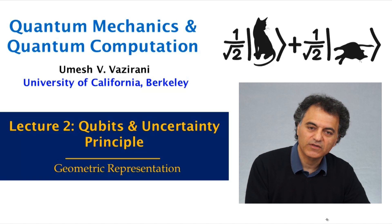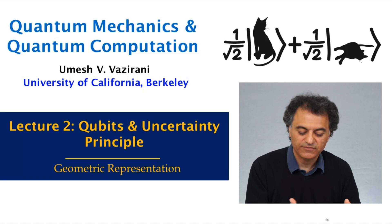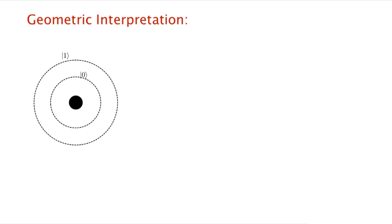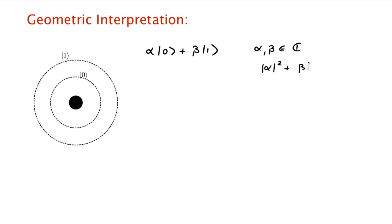In this video we'll talk about a geometric interpretation of quantum bits. A quantum bit is the state of something like an electron in a hydrogen atom confined to its ground or excited state, which we think of as zero and one. The general state of this electron is a superposition written as alpha|0⟩ plus beta|1⟩, where alpha and beta are complex numbers, normalized so that |alpha|² + |beta|² = 1.